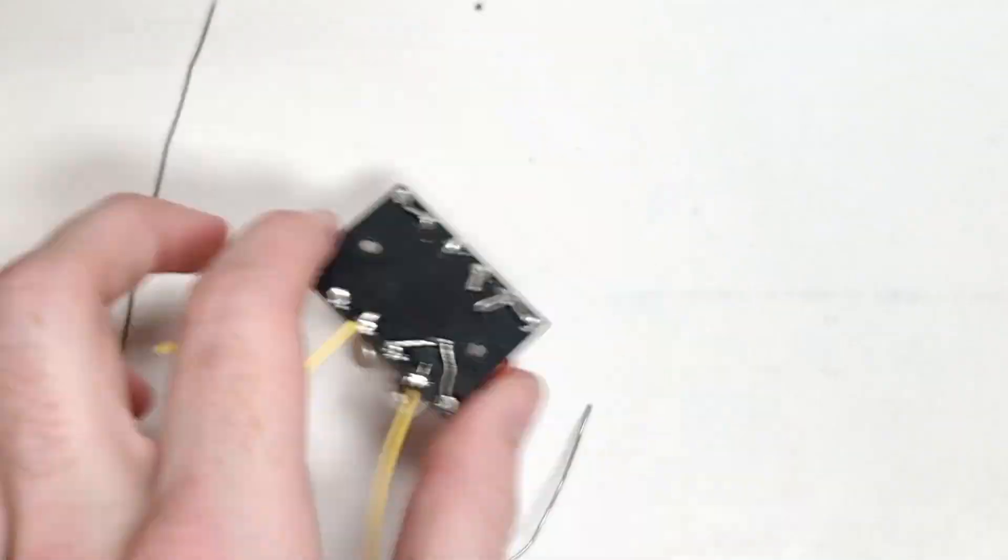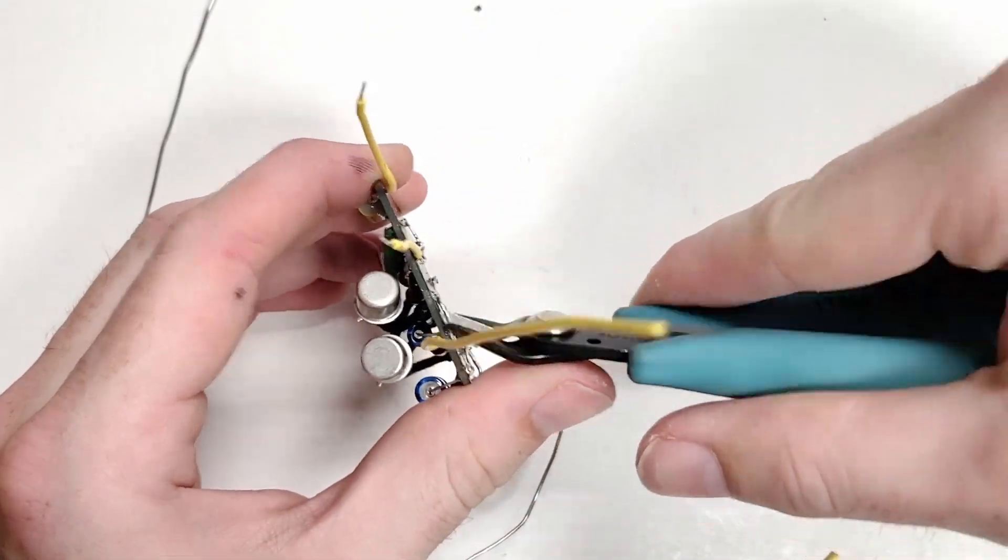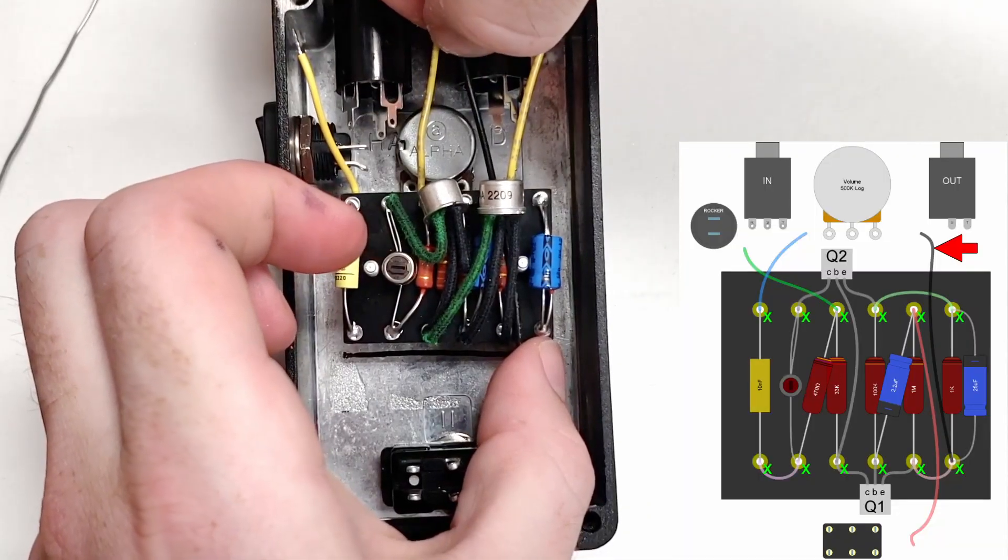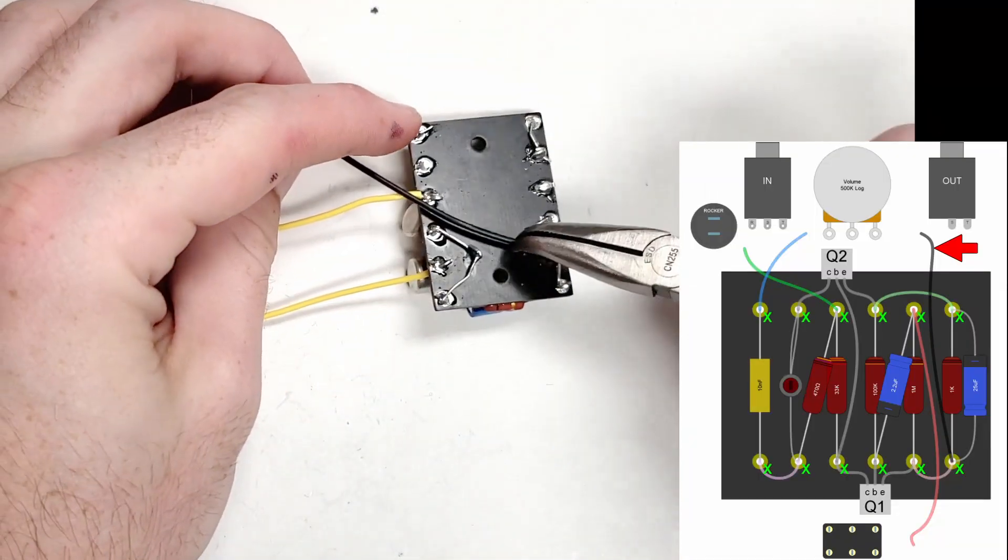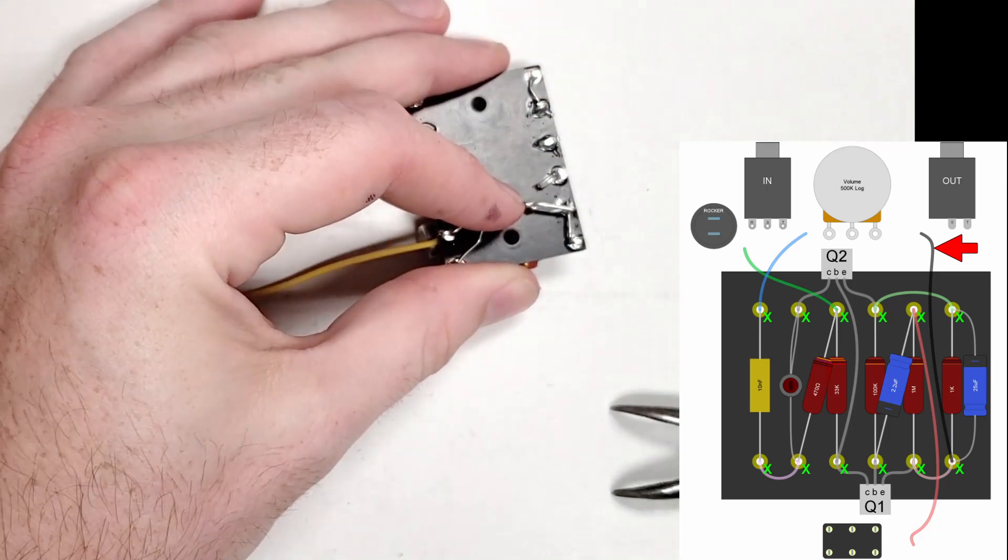Once that final connection has been made and soldered to the eyelet, the excess leads can be clipped. Now we'll measure the necessary length for the ground wire. Remember that I'm using a wire loop for this connection, but either of the common ground eyelets would work too.